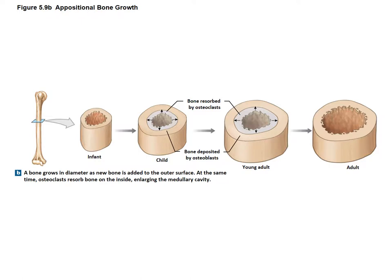Appositional bone growth is much like appositional cartilage growth — it adds rings like a tree. We can see the difference between an infant, a child, a young adult, and a full adult, with the medullary cavity continuing to grow and the bone wall continuing to thicken well into adulthood and until old age.